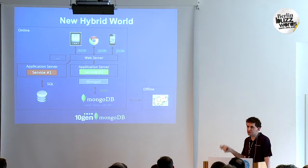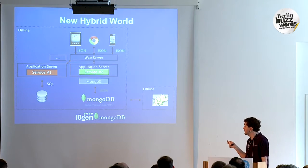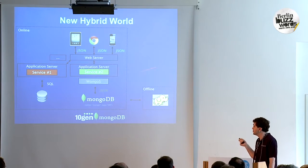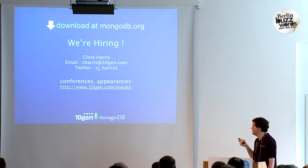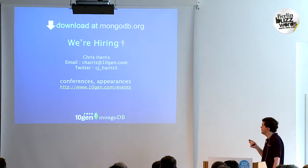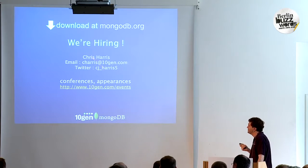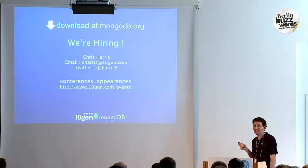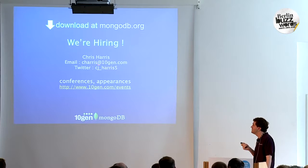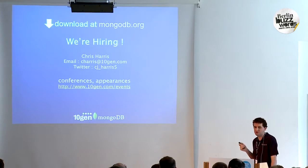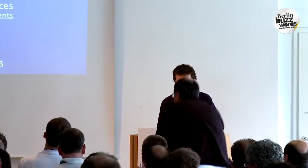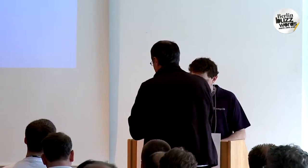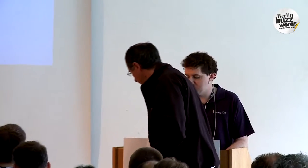You end up in a world of hybrid databases — some services for online processing using Oracle or MySQL, and others using MongoDB. You don't need to suddenly replace all your Oracle systems — that would be crazy. Start with one service using MongoDB, and once you've got that working, start to grow. You can also pull data from Mongo into Hadoop for offline processing.